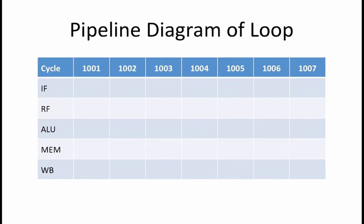Next comes the ALU stage, where all required arithmetic and logic unit operations are executed. The fourth stage is the MEM stage, where we can begin accessing memory for a load or store operation, because the address of the memory location was computed in the ALU stage. Finally, the last stage is WB, or the writeback stage, where the results are written back into the register file. The columns in a pipeline diagram represent the execution cycles.